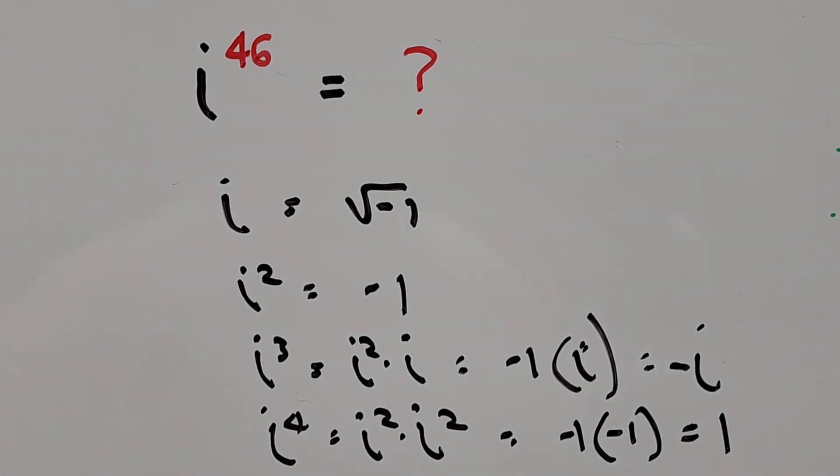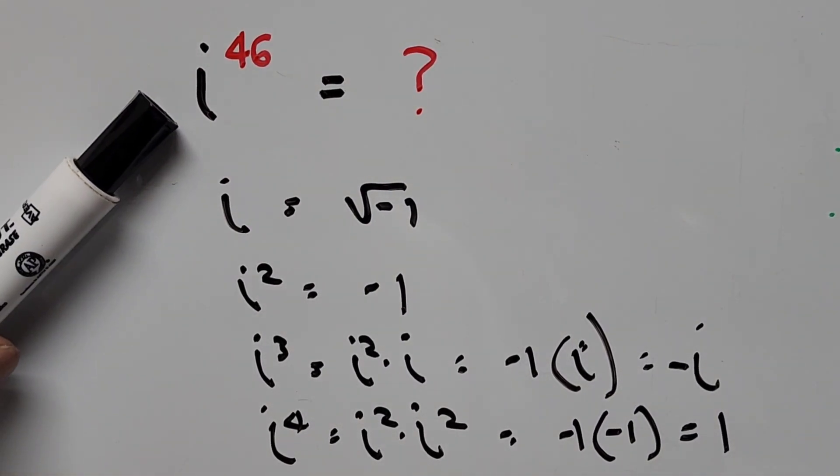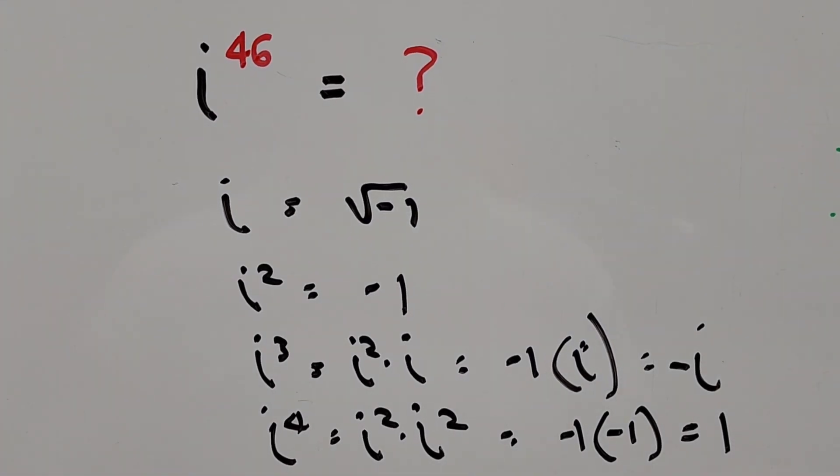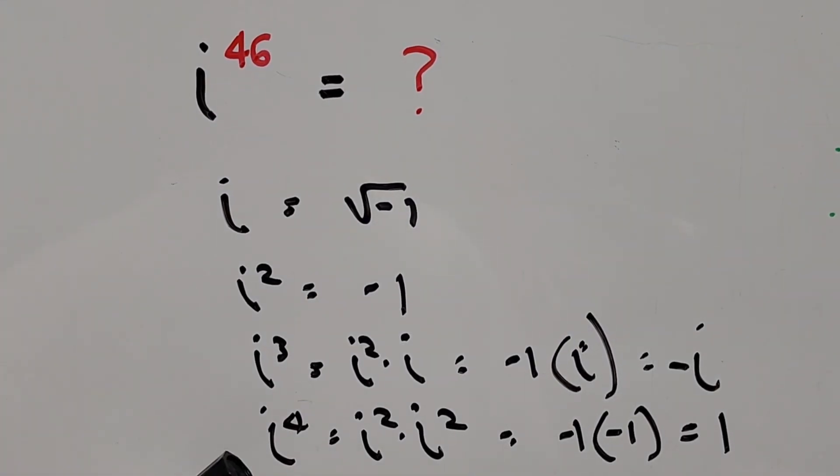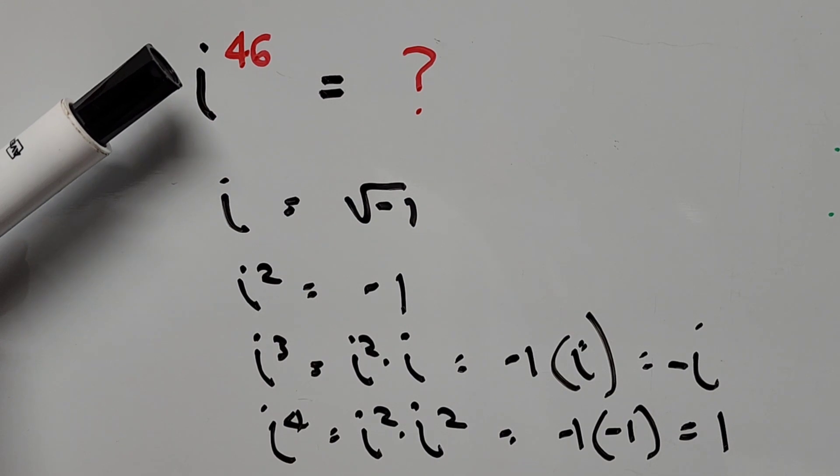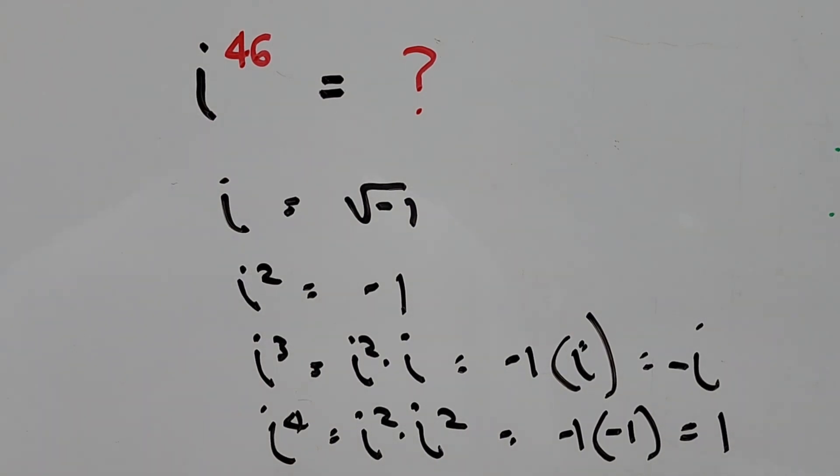So how do we solve i to the 46 power? Here the question is how many fours go into 46? That will be 11 times, since 4 times 11 is 44 and the remainder will be 2.